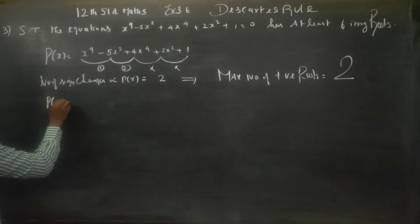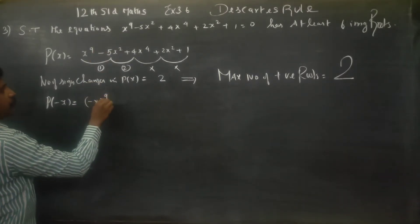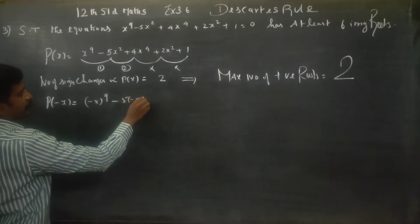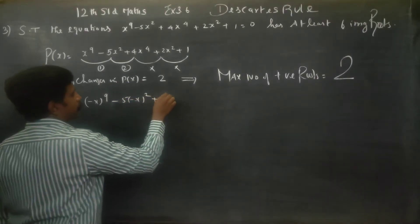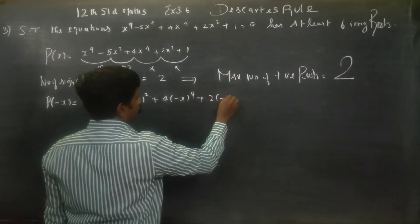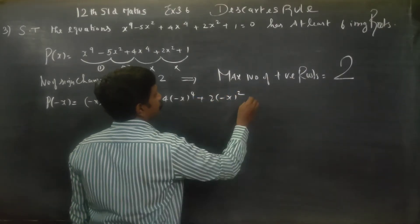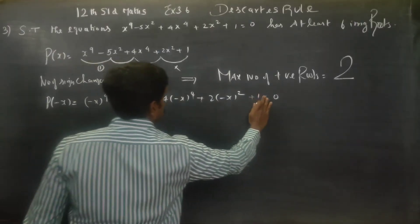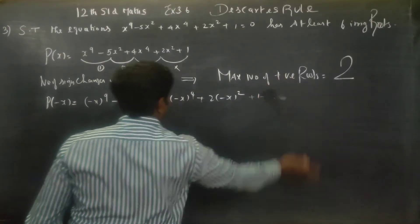I am going to P of minus x. What is P of minus x? Minus x power 9 minus 5 into minus x also square plus 4 into minus x whole power 4 plus 2 into minus x whole square plus 1 is equal to 0. Sorry, not equal to 0. It is a polynomial, right? It is a polynomial.